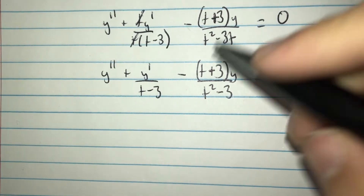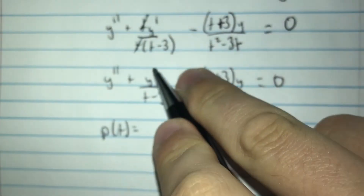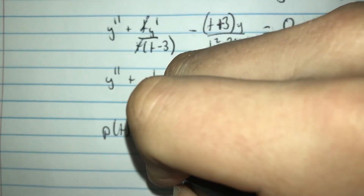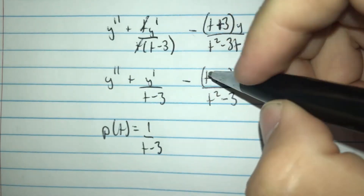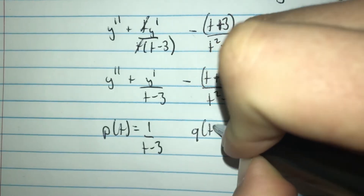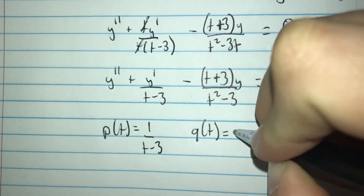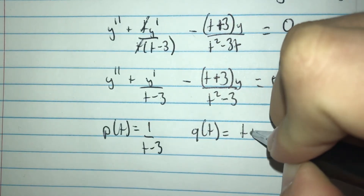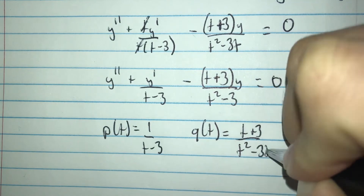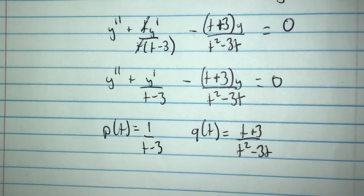Now we can identify p of t as 1 over t minus 3, since we exclude the y prime term. And q of t equals t plus 3 over t squared minus 3t.